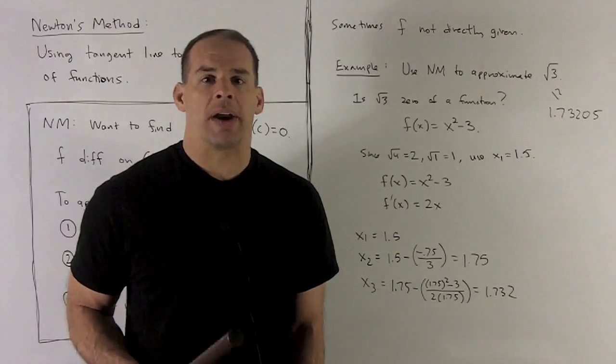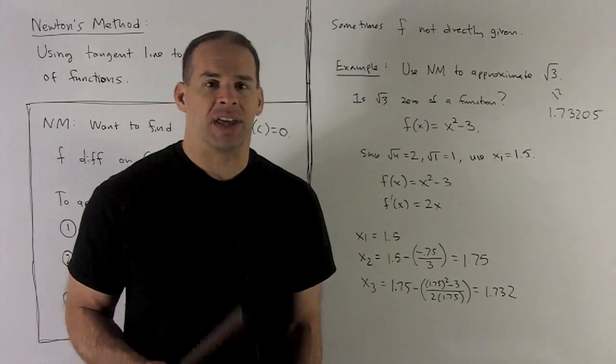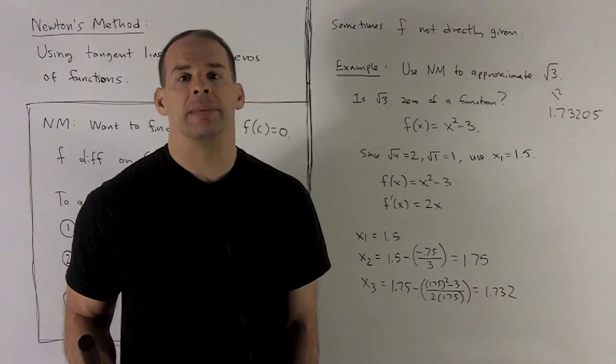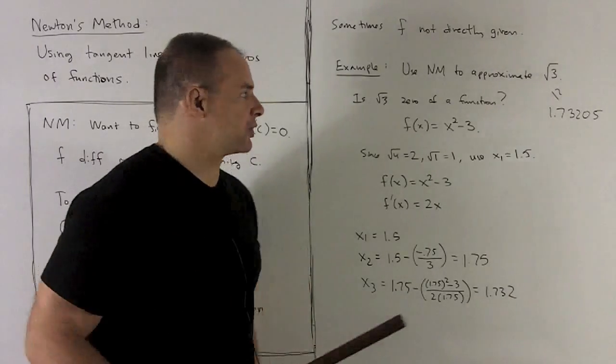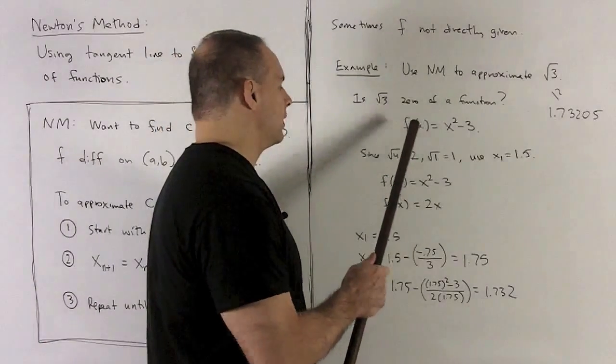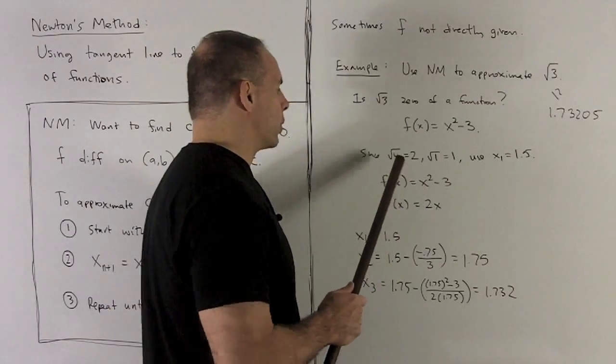Well, if I notice, squaring the square root of 3 is going to give me a 3. So that satisfies x squared minus 3. So the function we should use is f of x equal to x squared minus 3. Its derivative is going to be 2x. So I have everything I need except my first guess.